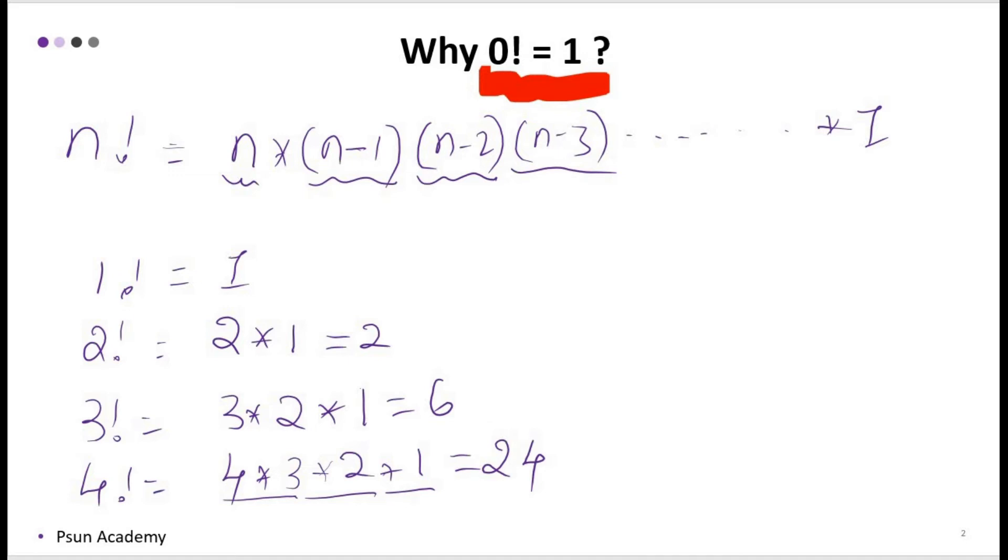So till now we have come top down approach. Now what we will do, we will go from bottom to top approach. That is, just see 24 divided by the value of n, that is 4, gives the answer of previous factorial.